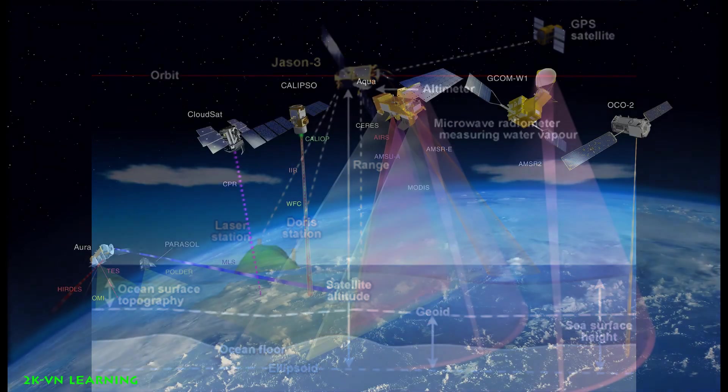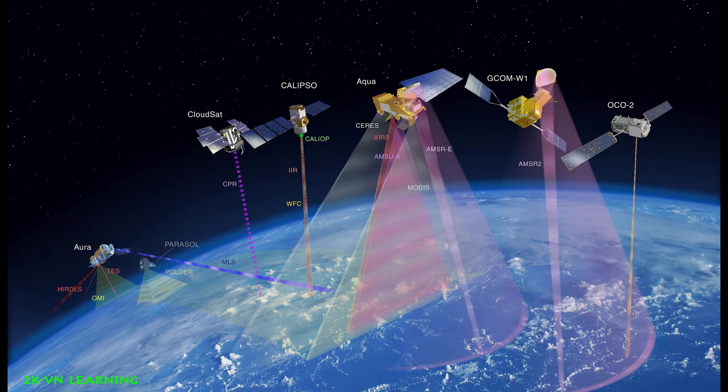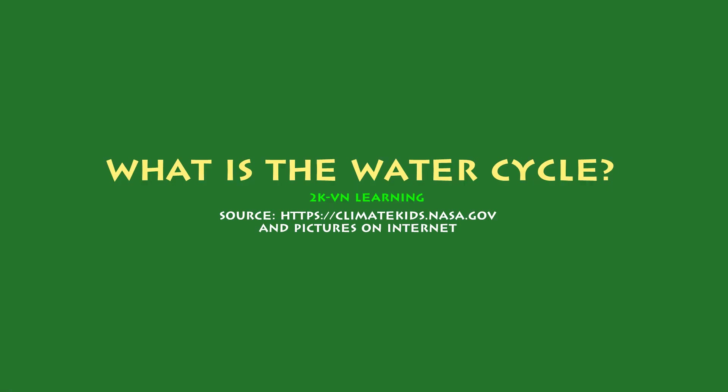NASA's Aqua satellite also collects a large amount of information about Earth's water cycle, including water in the oceans, clouds, sea ice, land ice, and snow. So these are all of the details about the water cycle. There are also some more facts about NASA that I have shared. That's it for today — I have told you about the Earth's water cycle. Goodbye.